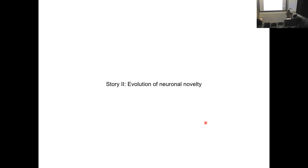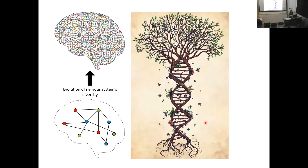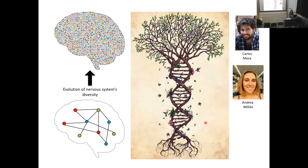Now I'm going to tell you about a different unpublished project: the evolution of new neuron types. Because C. elegans has this very simple nervous system and we know quite a lot about how it is differentiated, we thought it might be a very good system to try to understand how you modify regulatory networks to create new neuron types. This is an effort from two PhD students, Carlos Mora and Andrea Mijan.